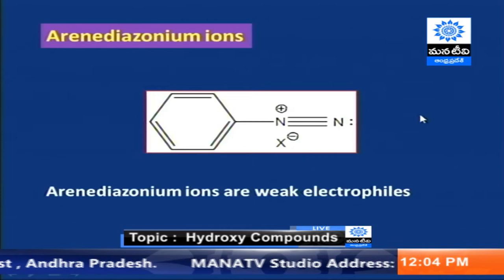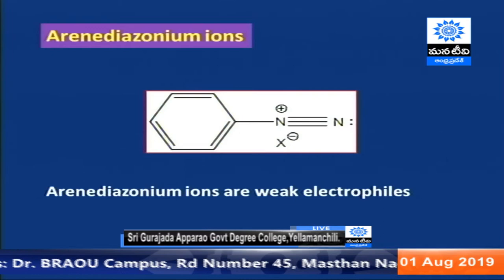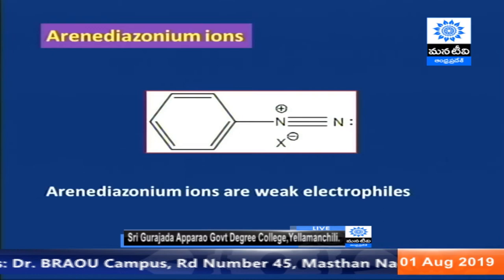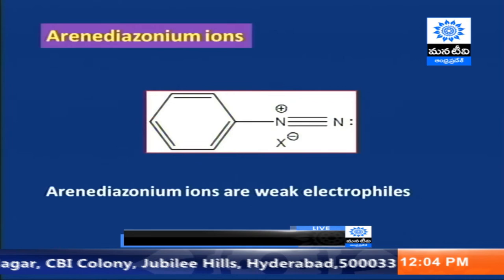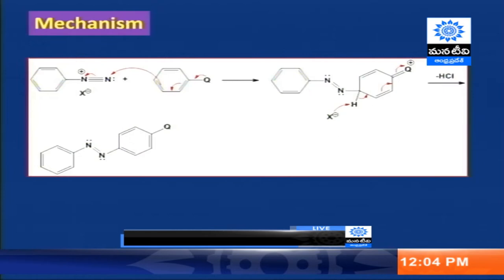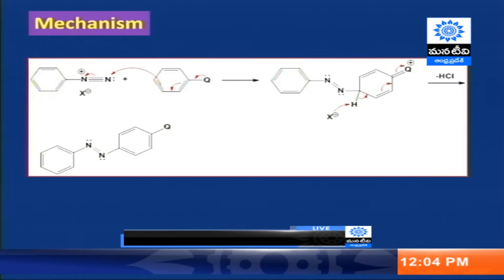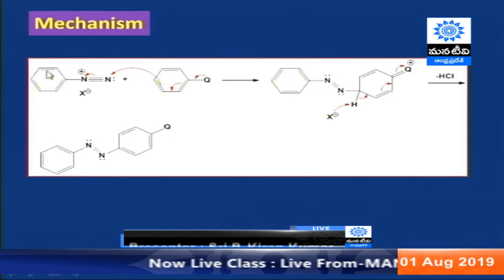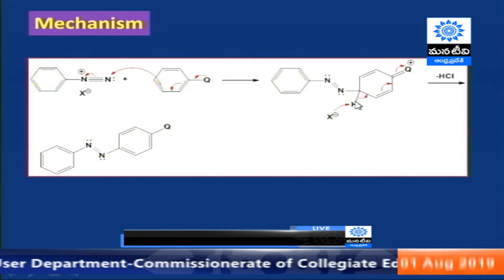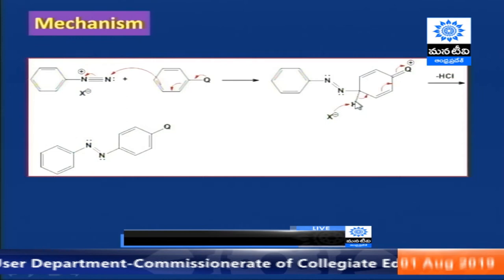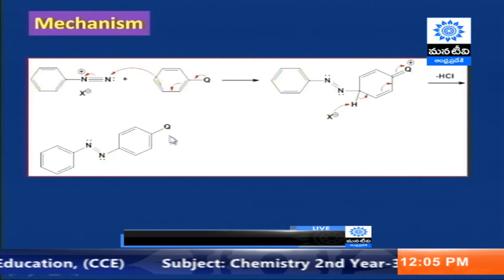Arene diazonium ions are basically weak electrophiles. Therefore, if they have to undergo electrophilic aromatic substitution reaction, we require aromatic systems which are highly reactive — containing groups which can pump electrons into the aromatic system. The mechanism shows this is a simple electrophilic aromatic substitution reaction, where H+ is abstracted by the halide ion to retain aromaticity.